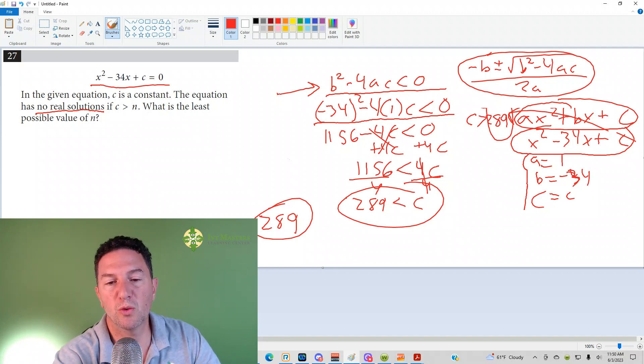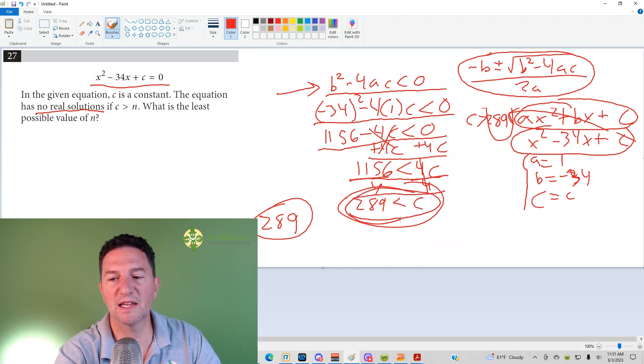Negative 34 squared, you can plug that into Desmos, you get 1156 minus 4 times 1 is going to be negative 4c, less than 0. Then you add 4c to both sides and you wind up with 1156 is less than 4c. Divide both sides by 4, and you get 289 is less than c.